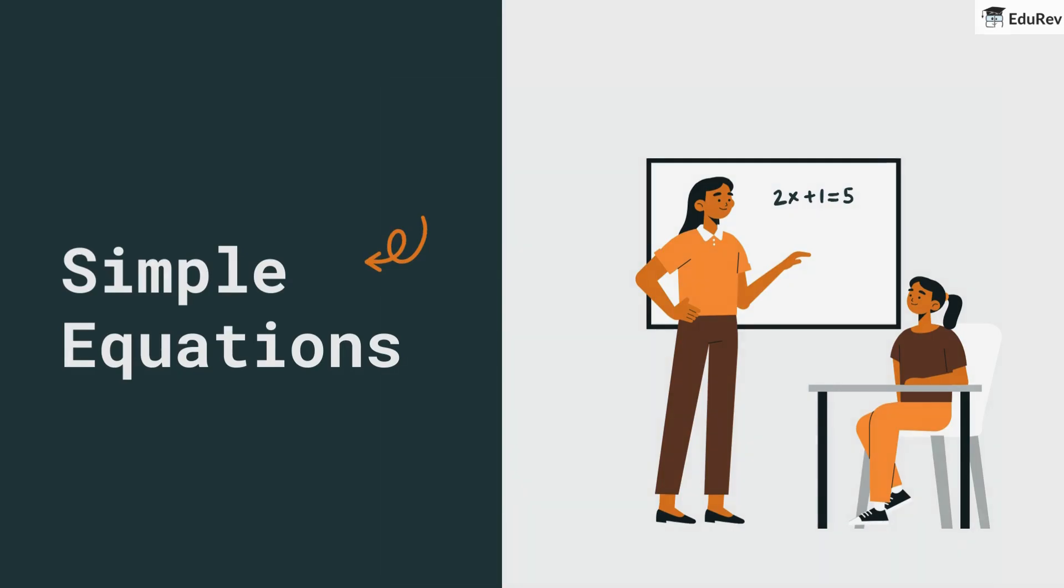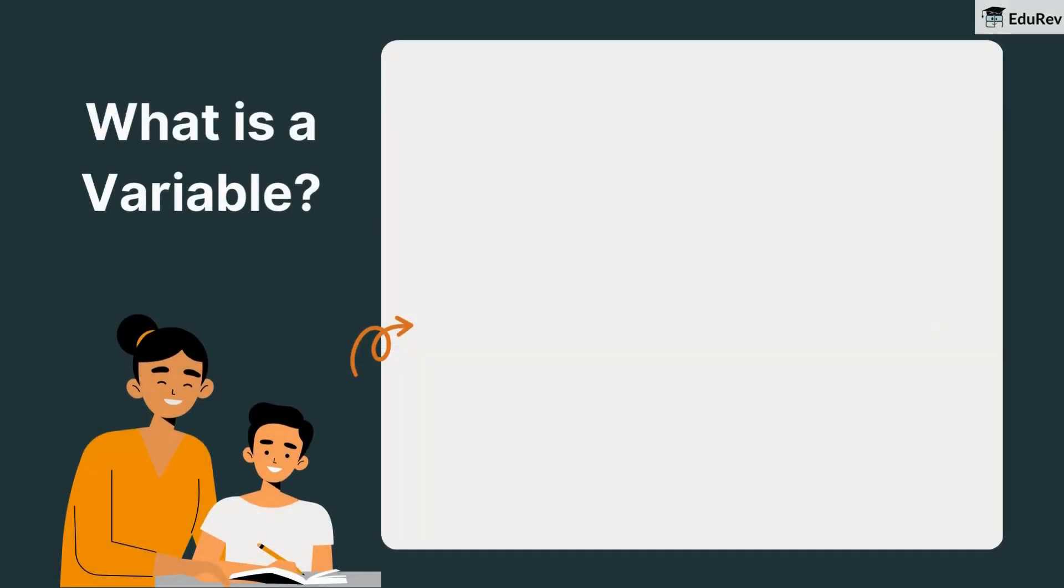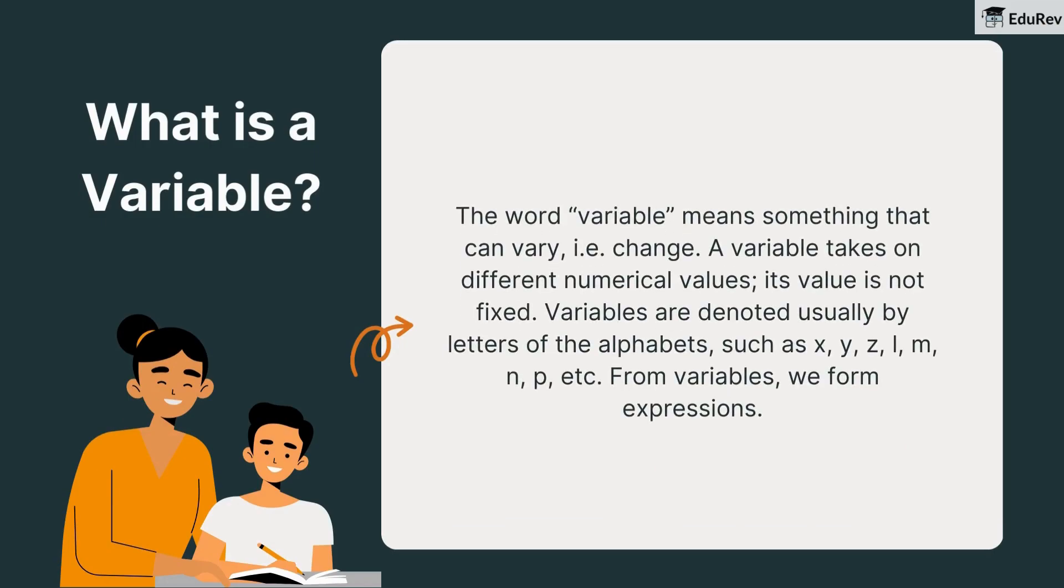First up, let's talk about what is a variable. The word variable means something that can vary, that is, change. A variable takes on different numerical values, its value is not fixed. Variables are denoted usually by letters of the alphabets, such as x, y, z, l, m, n, p, etc.